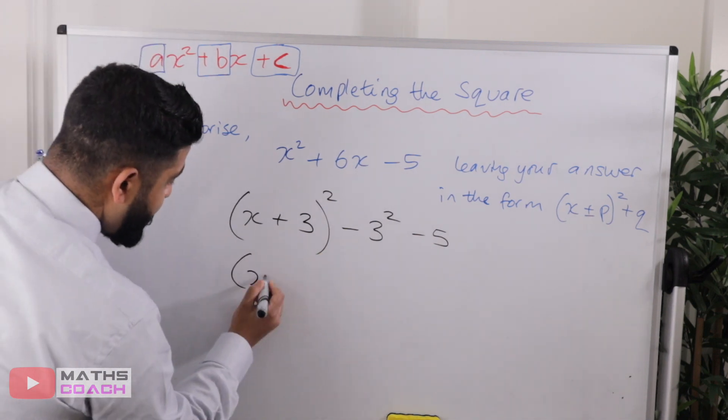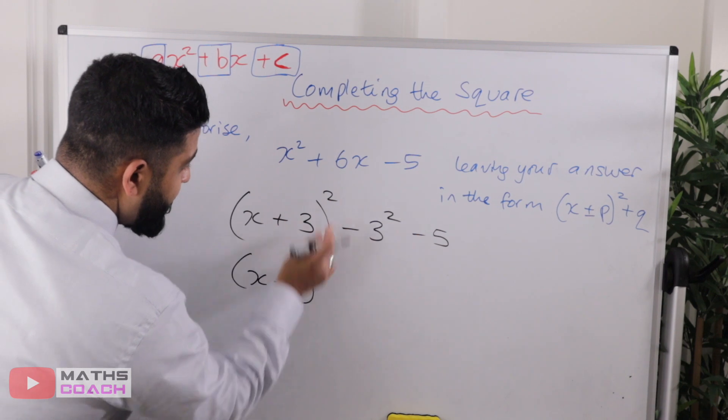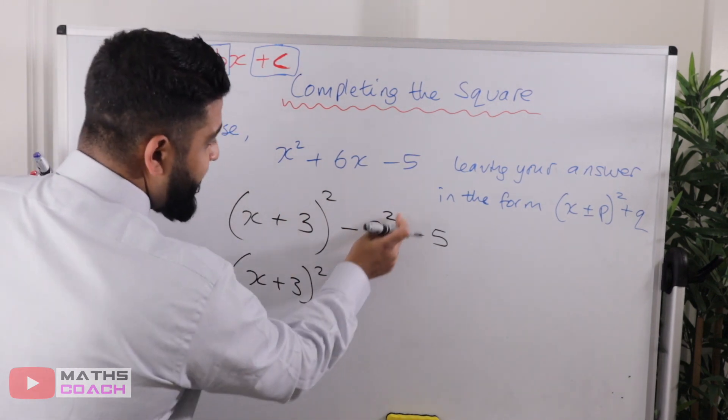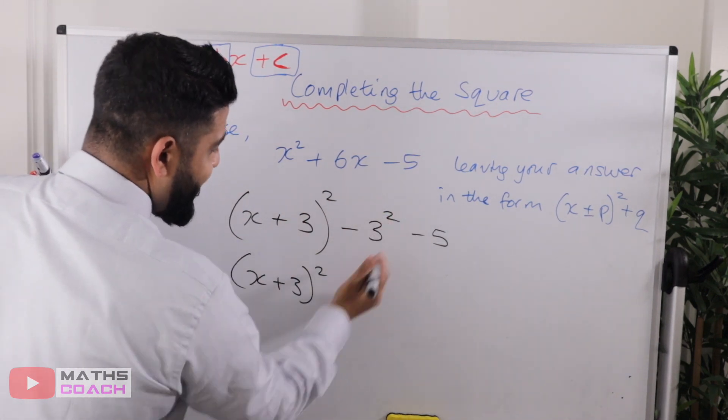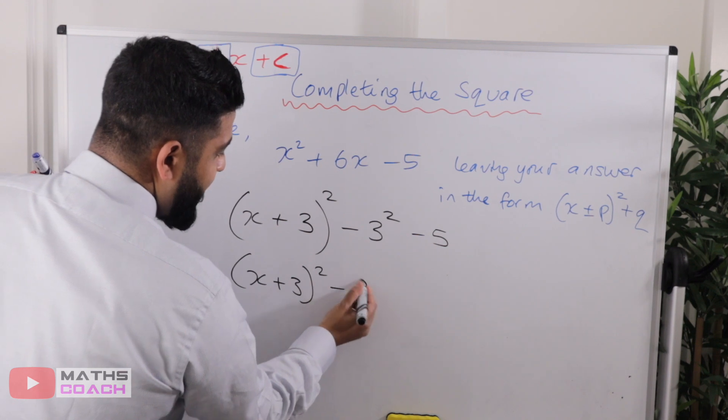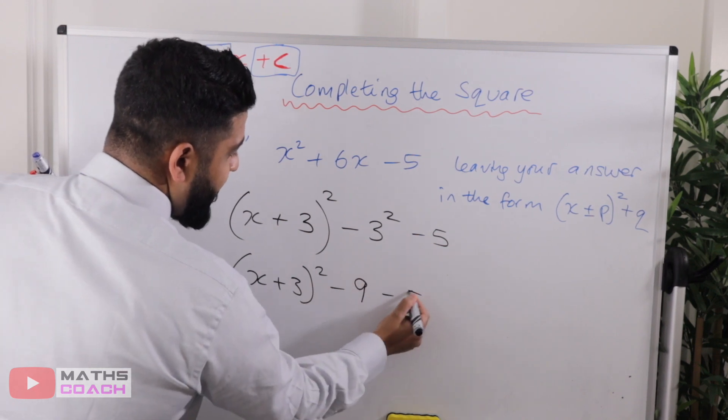So what do you do? You do x plus three here. Just rewrite that. There's nothing to tidy up. Now, three squared is nine. So it's minus nine, take away five.